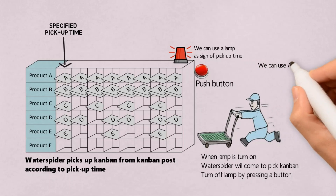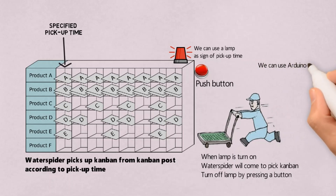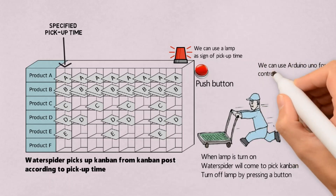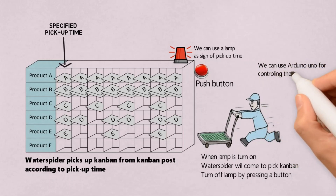We can use an Arduino Uno for controlling the lamp. It is a low-cost solution to make a HiJunka Post timer.